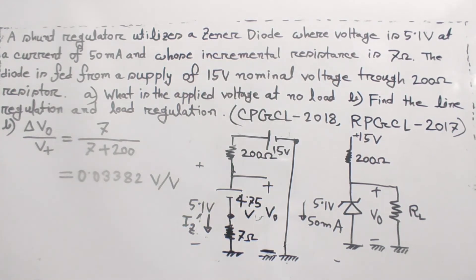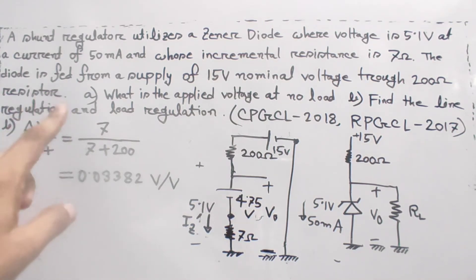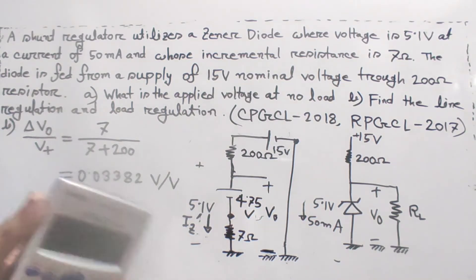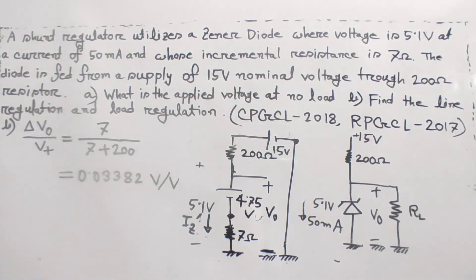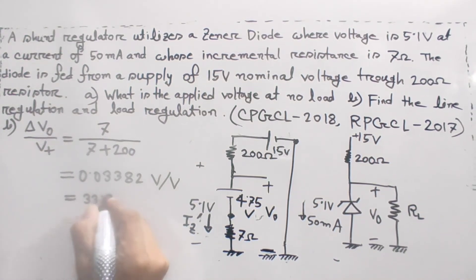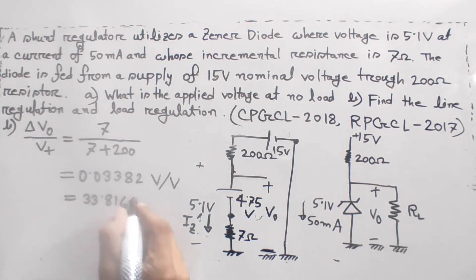The line regulation is 0.003382 volt per volt with respect to the nominal voltage. This ratio tells us how much the output voltage changes when the input (line) voltage changes. The unit is volt per volt.